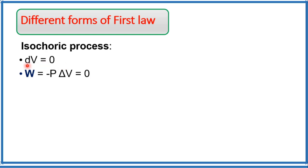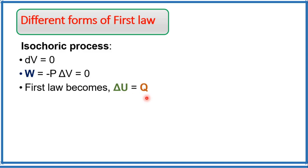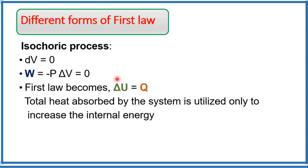In an isochoric process, there is no change in volume — ΔV = 0. Since W = −PΔV, W becomes zero. Therefore, the first law becomes ΔU = Q. The total absorbed heat is utilized only to increase the internal energy, with no work performed. Therefore ΔU can be written as Q_V, because ΔU equals Q at constant volume conditions.